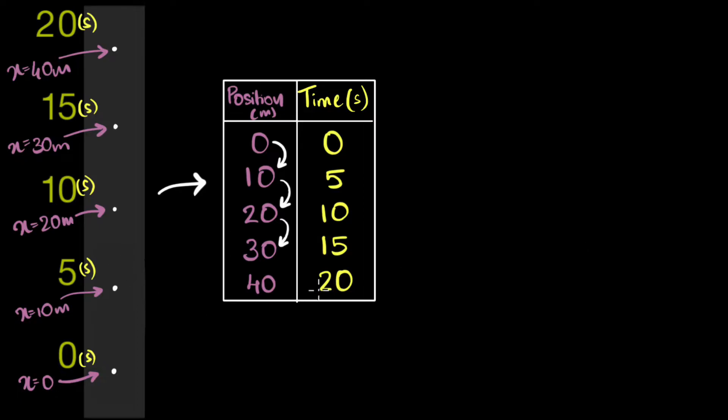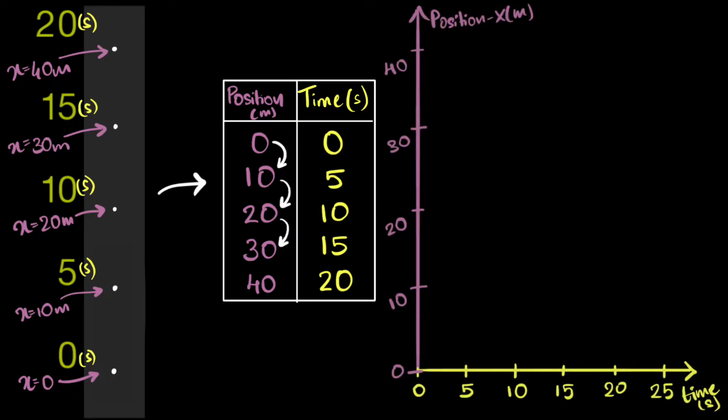Guess what? There is another way to represent this data. And that is by drawing what we call a position time graph. Here, we draw the time on the horizontal axis, and we draw the position on the vertical axis. And by the way, we tend to use the symbol X to represent the position. That's just a tradition for us. Now, again, before I plot it, can you try to plot the position time graph yourself first and see what kind of graph you end up with?